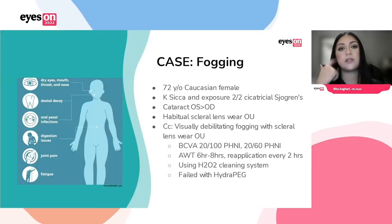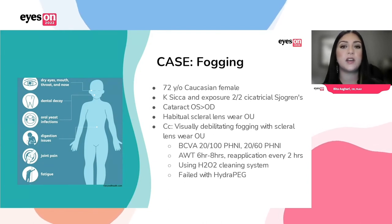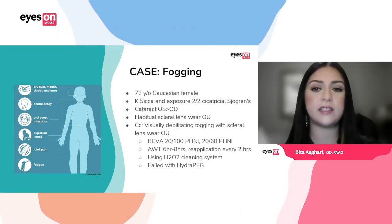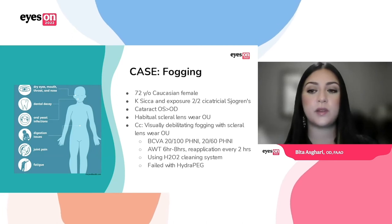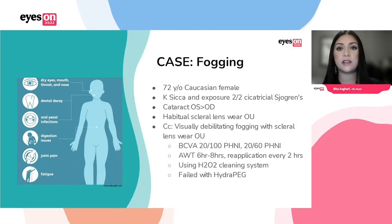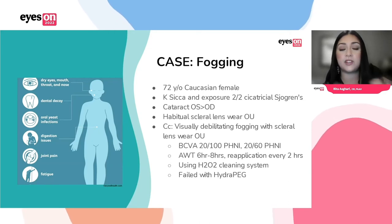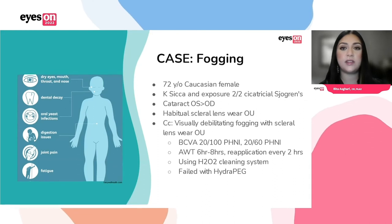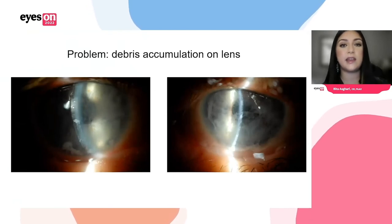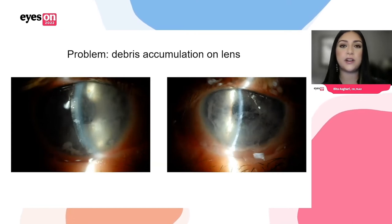This is a case of a 72-year-old Caucasian female with a history of Sjogren's and cicatricial changes — quite a severe Sjogren's patient. She had cataracts progressing worse in the right than the left, and she had been a long-term scleral lens patient of mine. She came in complaining of visually debilitating fogging with her lenses — she always had fogging before, but with her cataracts progressing it got too visually significant. Her vision was reduced at 20/100 and 20/60. She was only able to wear them six to eight hours a day, reapplying them by removing, rinsing the debris off, and putting them back in. She was already using a hydrogen peroxide cleaning system and had tried Hydropeg in the past, which she failed.